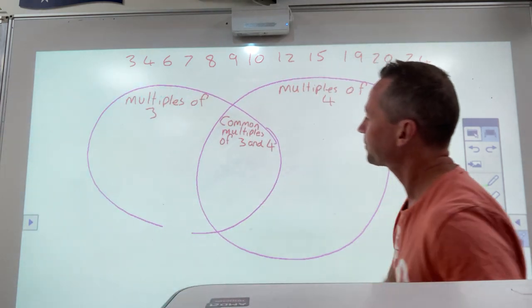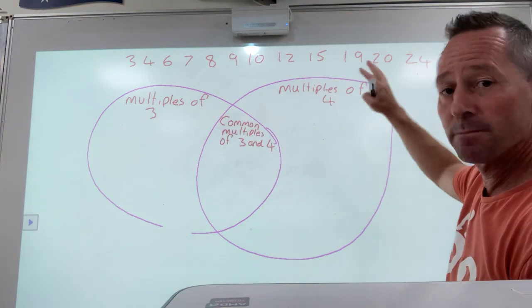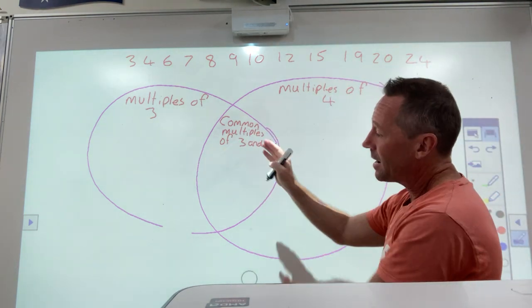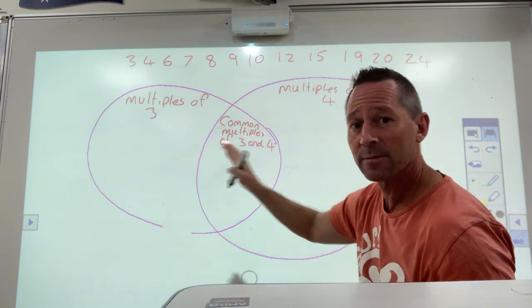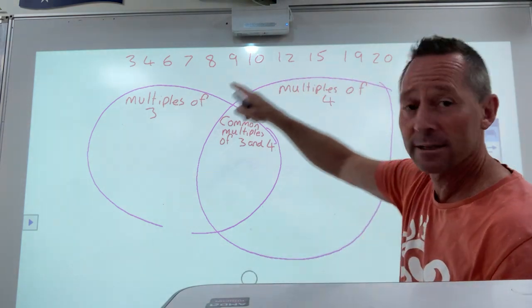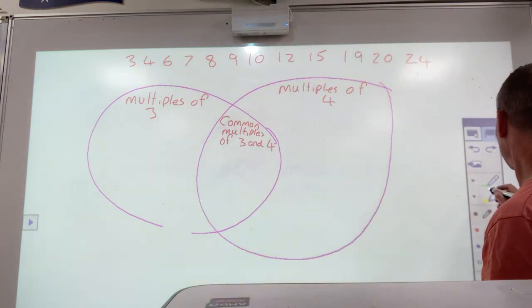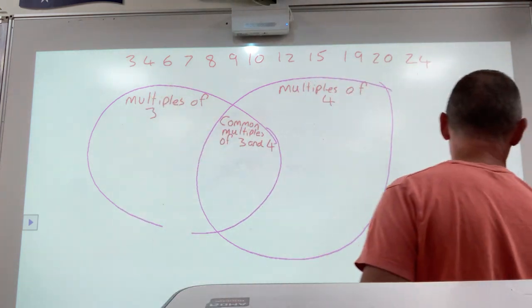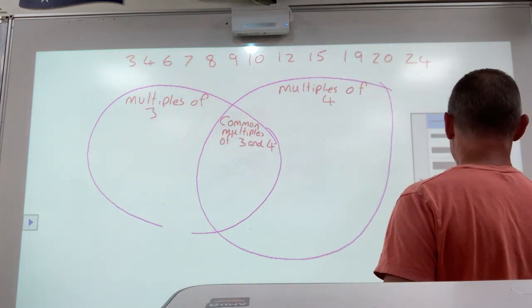These are the ones that you're going to put either in here or not. So I'll just show you this example. Okay, so right now, multiples of 3, multiples of 4, common multiples of 3 and 4.